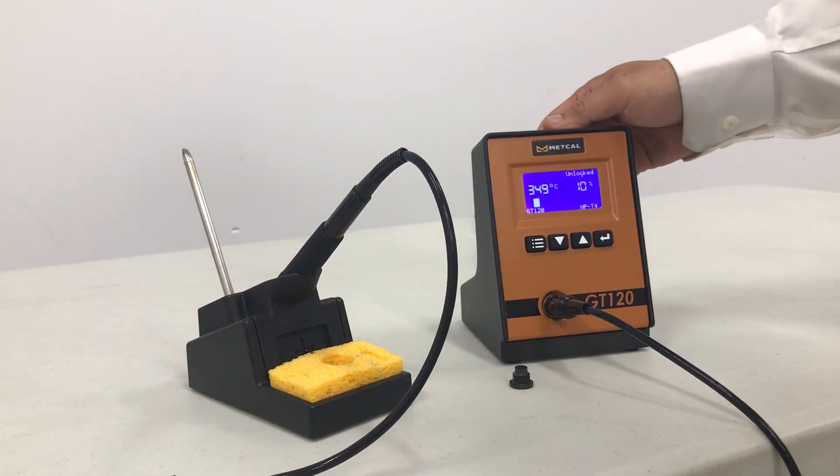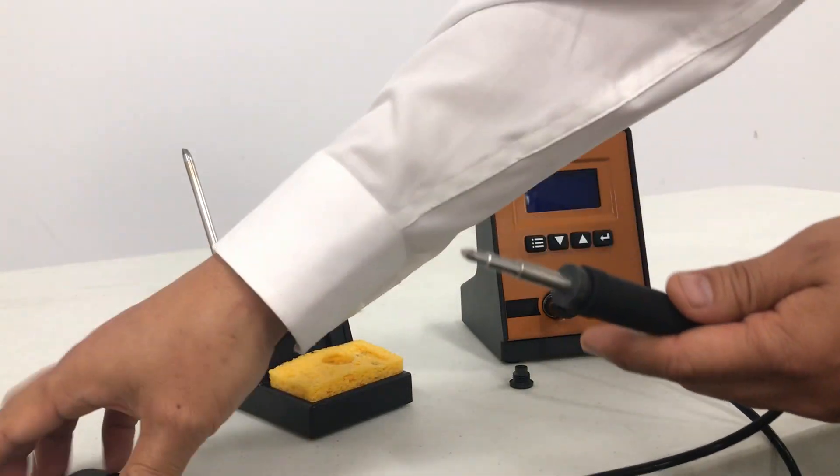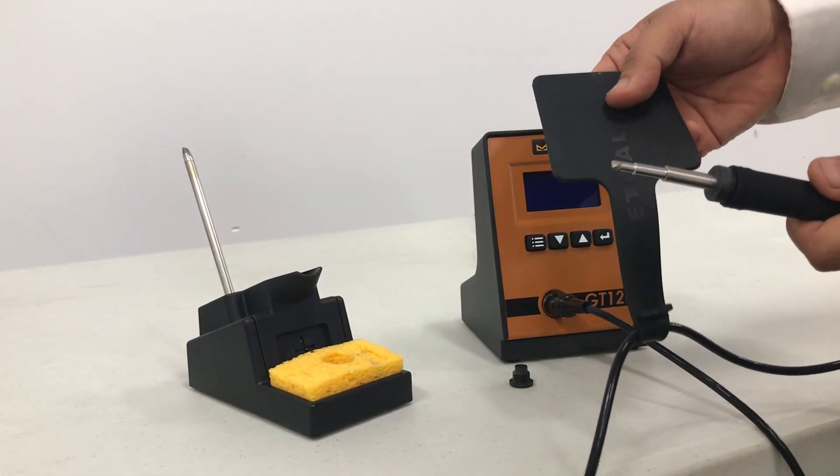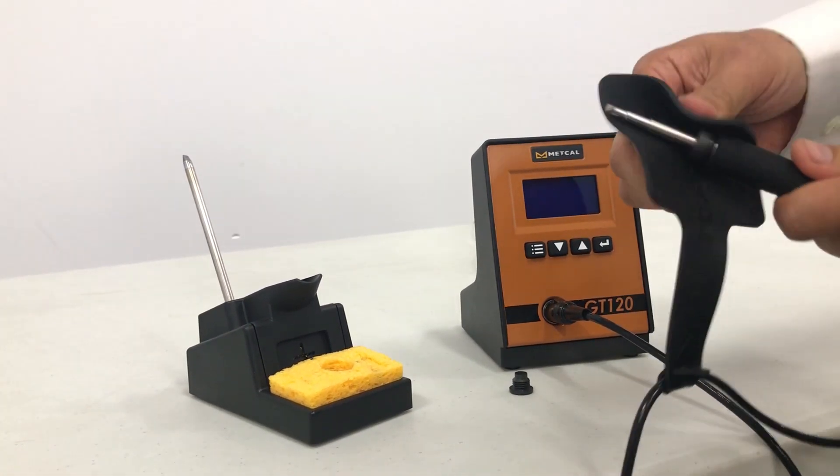Safety first. We're going to turn off the unit. Now with the handpiece and cartridge removal pad, we're going to loosen the tip retainer.